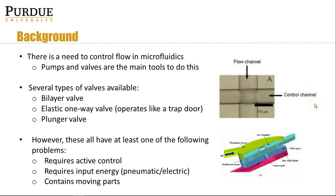An elastic one-way valve is like a flapper that seals with high pressure in one direction and opens with high pressure in the other. A plunger valve, shown in the bottom picture, is similar to a flapper valve except you can control it pneumatically to open or close. However, these all have at least one of the following problems: they require active control input energy, or they have moving parts which can wear out or break.